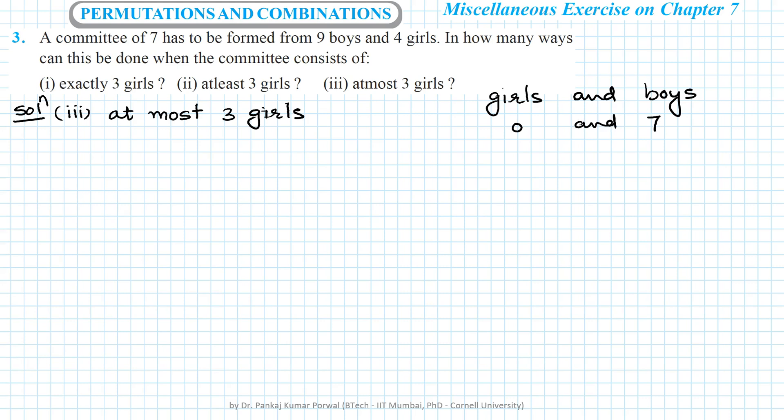Or we can have one girl and six boys, or we can have two girls and five boys, or we can have three girls and four boys. Because we can have at most three girls, we cannot have more than three girls, so these are all the combinations that we have to consider.